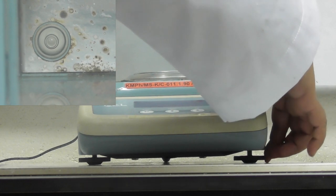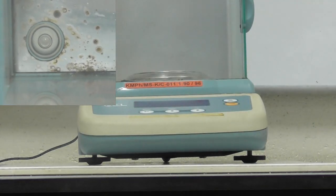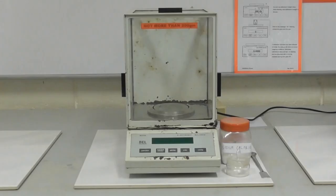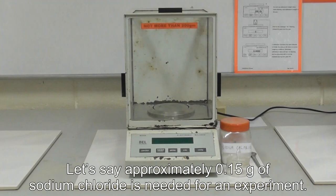Now the balance is perfectly leveled and ready to use. Let's say approximately 0.15 grams of sodium chloride is needed for an experiment, but the accurate mass of sodium chloride is required for calculation.